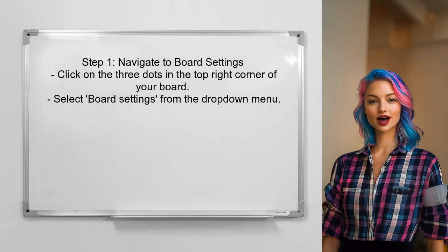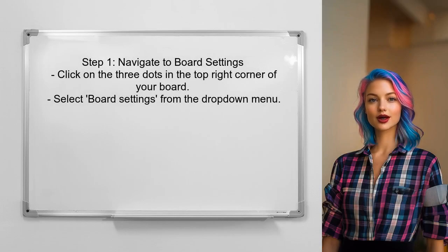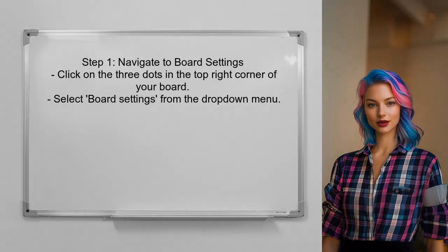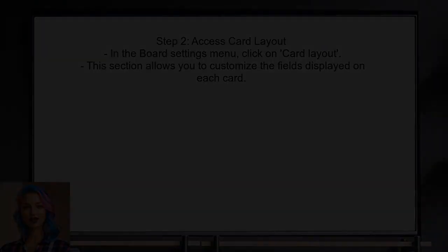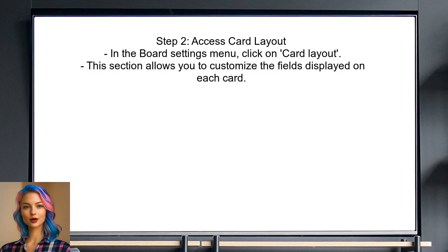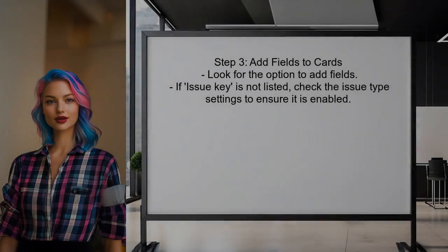To activate linking to Jira issues, the user should first navigate to the board settings. This is where they can customize how issues are displayed on the board. Next, the user needs to go to the card layout section within the board settings. This is where they can add fields to the issue cards. In the card layout settings, the user should look for the option to add fields.